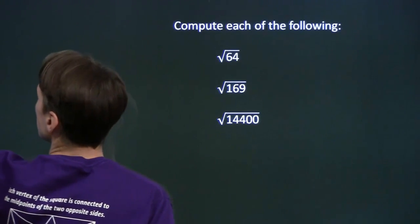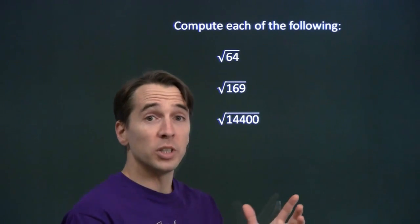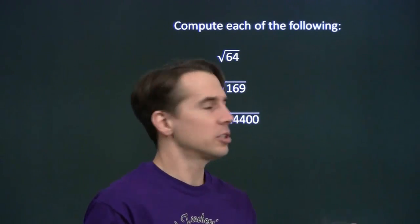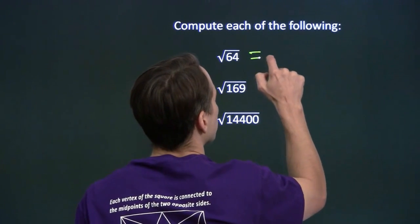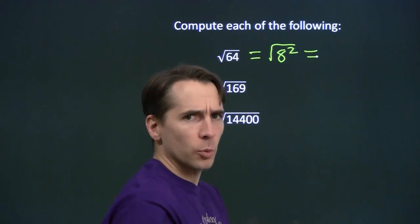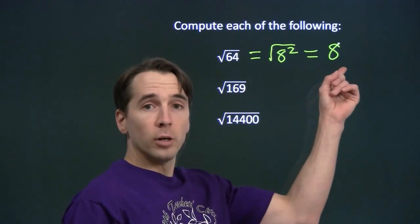Let's try a few examples. So the square root of 64, that means what number do we square to get 64? Of course, 8 squared is 64. So the square root of 64 is the same thing as the square root of 8 squared. And of course, we square 8 in order to get 8 squared. So the square root of 64 is 8.